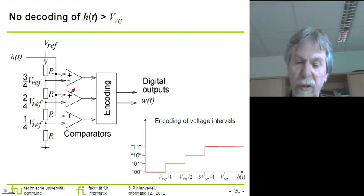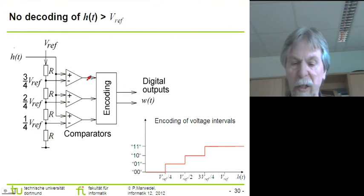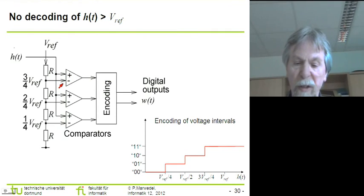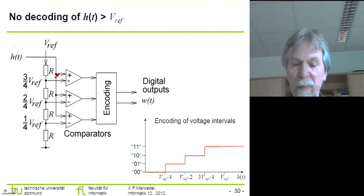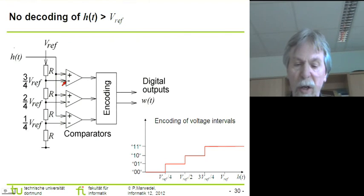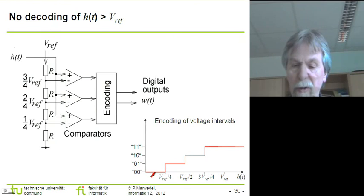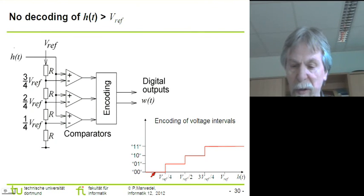These comparators can be pretty fast. These encoders just need a few logic levels. Therefore, this whole conversion can typically be done in a couple of nanoseconds — it is really very fast. But we also see that we need quite a number of comparators. If we would like to distinguish between n different voltage intervals, we would need n minus 1 different comparators.